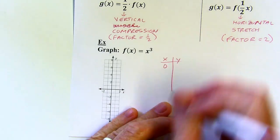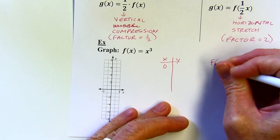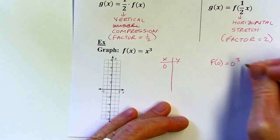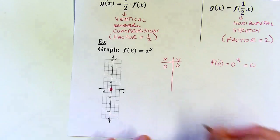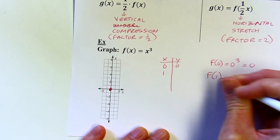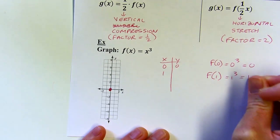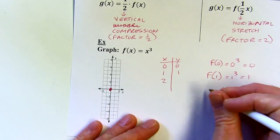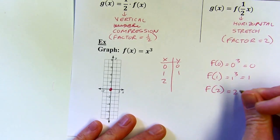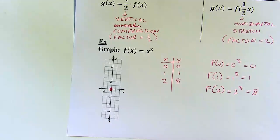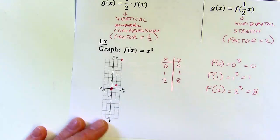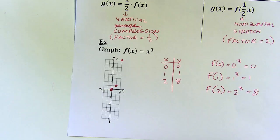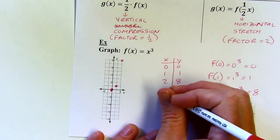When I plug in zero for x, let's find f(0): zero to the third is zero. So the point (0, 0) is on my graph. When we plug in one: one to the third equals one. Let's plug in two: f(2) gives us two to the third, which is eight. So the point (2, 8) is going to be on the graph. I've got (1, 1) and (2, 8), which looks kind of like the right side of a parabola, but it's not quite the same shape. Let's see what happens when we look at some negative values.